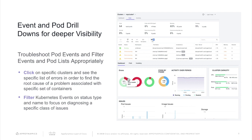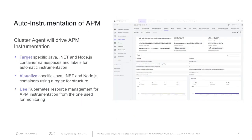We've also introduced the auto-instrumentation of APM. The Kubernetes cluster agent is now driving APM instrumentation across your agent types, whether that's Java, .NET, Node.js, and more. The container namespace and labels are now automatically instrumented with APM. This is a very powerful capability that we now offer all of our customers — you're able to use your Kubernetes resource management for APM instrumentation from the same tool you use for monitoring itself.